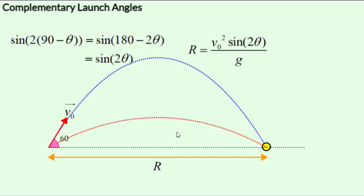In this case, the complementary angle to 30 degrees is 60 degrees. And so we get the same range for 30 and 60.